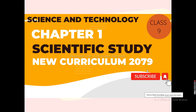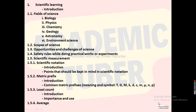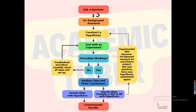Hello everyone, namaste. Welcome to my channel Academic Jubal. Today we are going to discuss the first chapter from Grade 9 science, that is Scientific Studies. If you are new to this channel, please subscribe and hit the bell icon for notifications. Please like and share this video among your friends. In this unit we are going to discuss scientific learning, fields of science, scopes of science, opportunities and challenges of science, safety rules while doing practical works or experiments, scientific measurement, scientific notation, metric prefix, least count, and average.